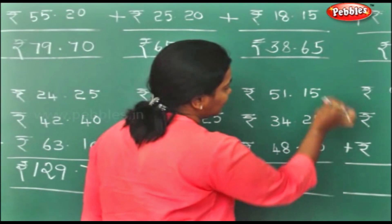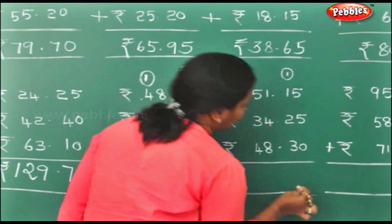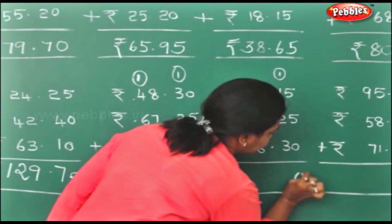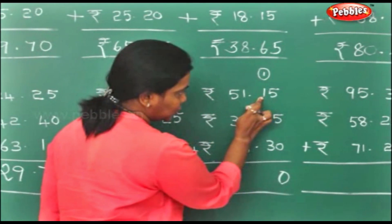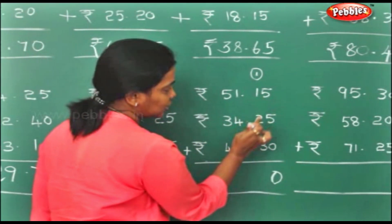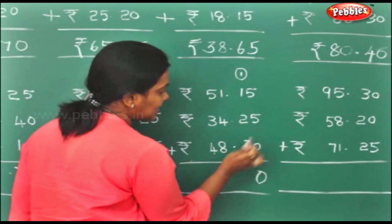5 plus 5 is 10, 1 on top, 0 down. 1 plus 1 is 2. 2 plus 2 is 4. 4 plus 3 is 7.